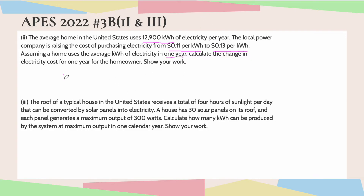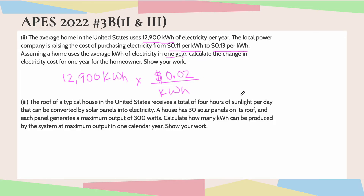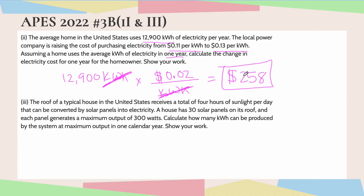We know that the average home uses 12,900 kilowatt hours, and the price is increasing from 11 cents to 13 cents, which is net-net just two cents per kilowatt hour. So this is all we have to do to set this problem up — cancel out kilowatt hours, and typing this into the calculator, I got $258. That is the change in electricity cost in one year for the homeowner.